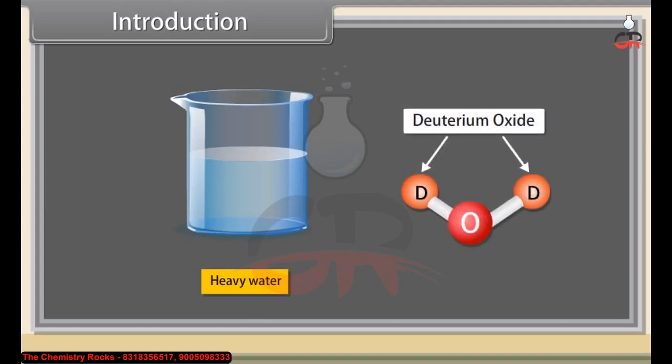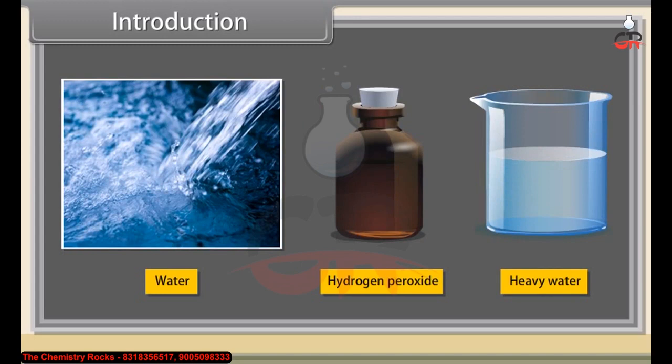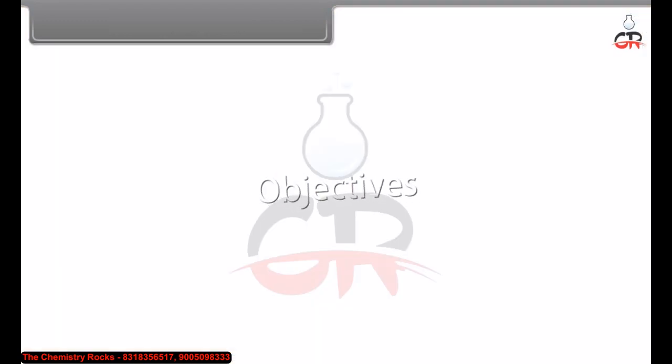Heavy water is a deuterium oxide, another form of water which contains the hydrogen deuterium isotope. Throughout this module we will learn about water, hydrogen peroxide, and heavy water.